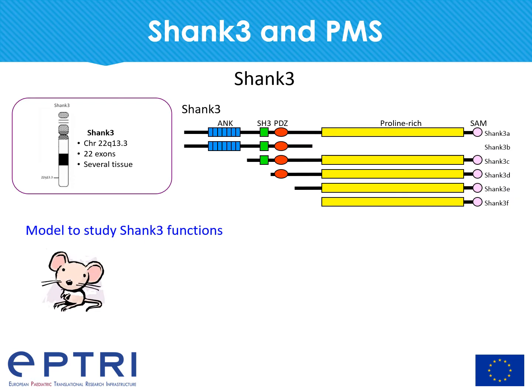Among these genes, SHANK3 is considered the major cause of the neurological symptoms found in patients. The SHANK3 gene encodes for a huge scaffold protein composed of several protein-protein interaction domains that allow SHANK3 to interact with more than 30 synaptic proteins. To better clarify the role of SHANK3 in brain development and neuronal function, we decided to use a SHANK3 knockout mouse model.